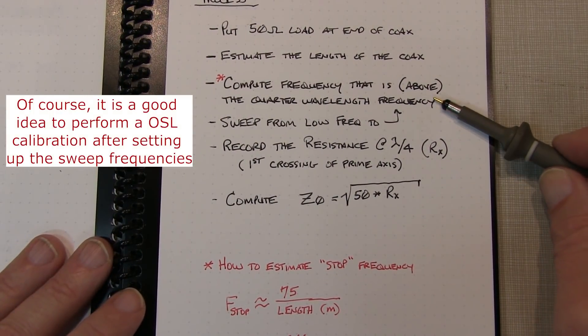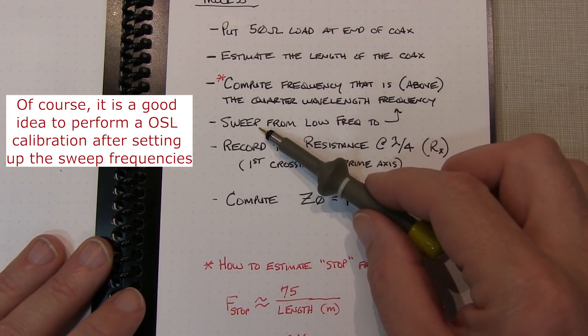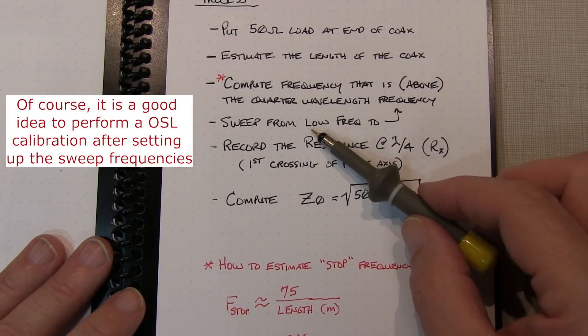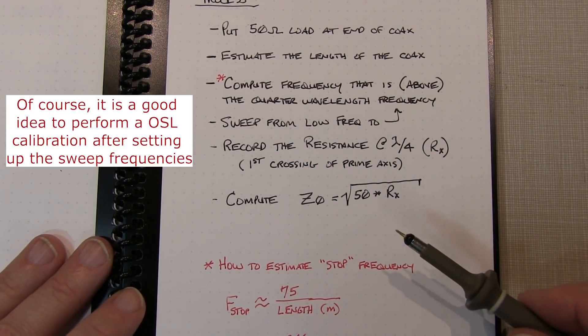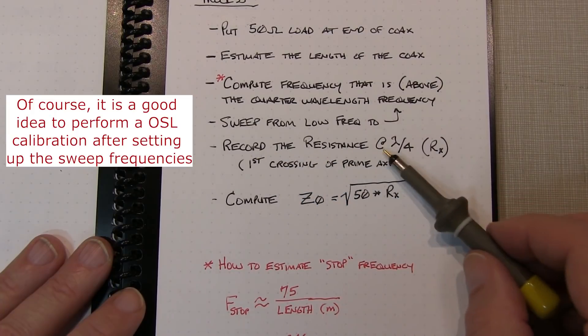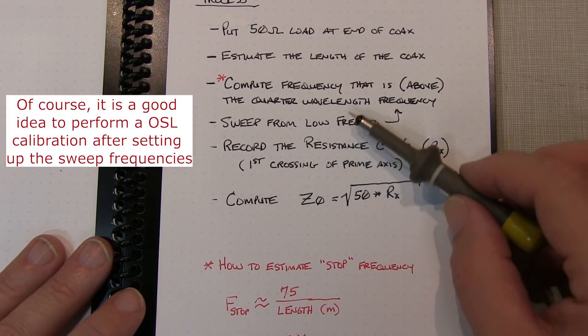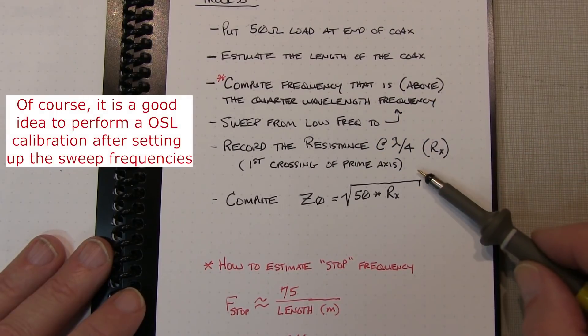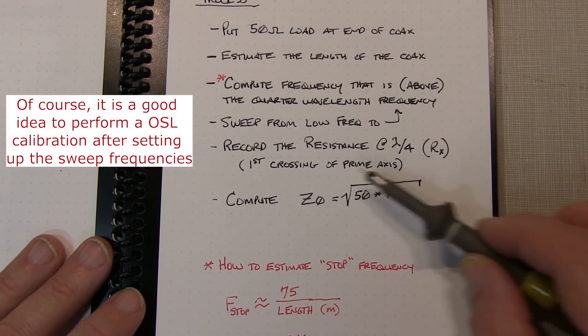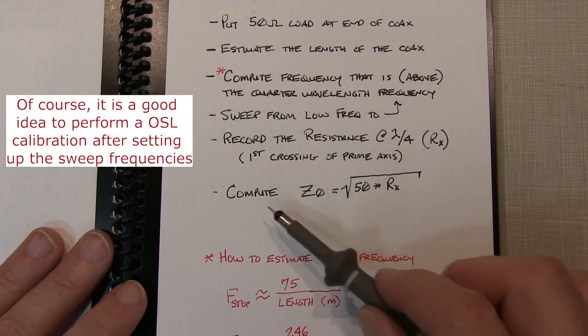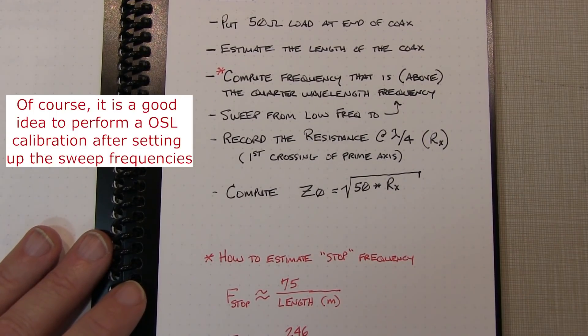So once we have that, that's our stop frequency. We're going to sweep from a very low frequency, like 50 or 100 kilohertz, up to that stop frequency. Record the resistance at a quarter-wavelength away, and that's when the curve rotates around and crosses the prime axis in the Smith chart again. So it's a very simple measurement to make, and then we can simply compute the line impedance.